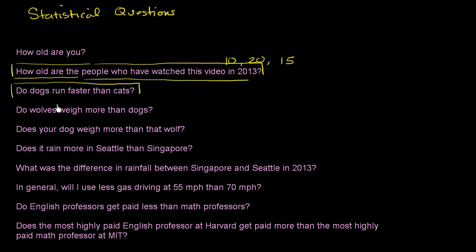We're talking about, in general, a whole population of dogs versus the whole species of cats. There's variation in how fast dogs run and how fast cats run. But if we were talking about a particular dog and a particular cat — does dog A run faster than cat B — well, that's not going to be a statistical question. You don't need the tools of statistics.